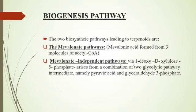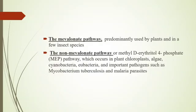Biogenesis pathways: the two biosynthetic pathways leading to terpenoids are the mevalonate pathway, producing mevalonic acid from three molecules of acetyl-CoA, and the mevalonate-independent pathway via 1-deoxy-D-xylulose 5-phosphate, which arises from a combination of two glycolytic intermediates, namely pyruvic acid and glyceraldehyde-3-phosphate. The mevalonate pathway is predominantly used by plants and a few insect species. The non-mevalonate pathway, also known as the methyl-D-erythritol-4-phosphate pathway, occurs in plant chloroplasts, algae, cyanobacteria, eubacteria, and important pathogens such as Mycobacterium tuberculosis and malaria parasites.